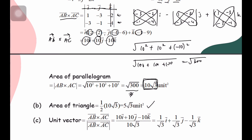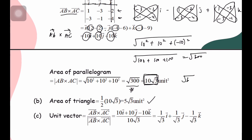When the question asks for the area of the triangle, you just multiply the parallelogram area by half. So half of 10√3 is 5√3 square units. You can leave the answer as √300 or in simplified form 10√3 — either form is acceptable.